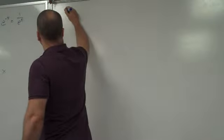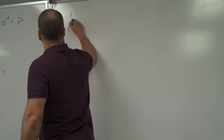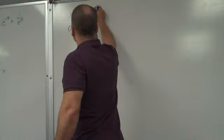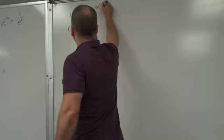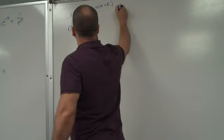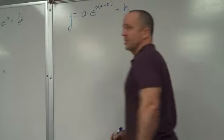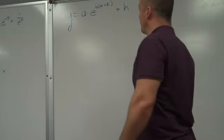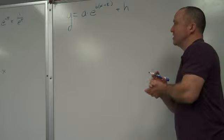Okay. Transformations of these things. I'll use the same letters I used before. Y equals A times E to the B times x minus k, plus h. Anybody remember what these four letters do?